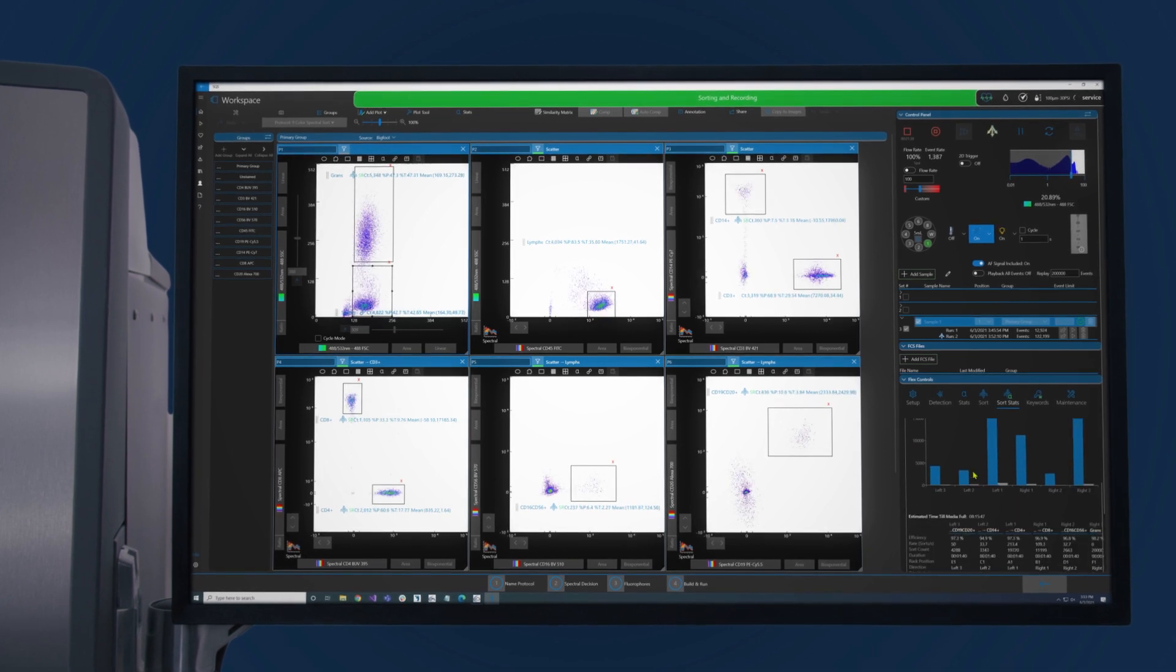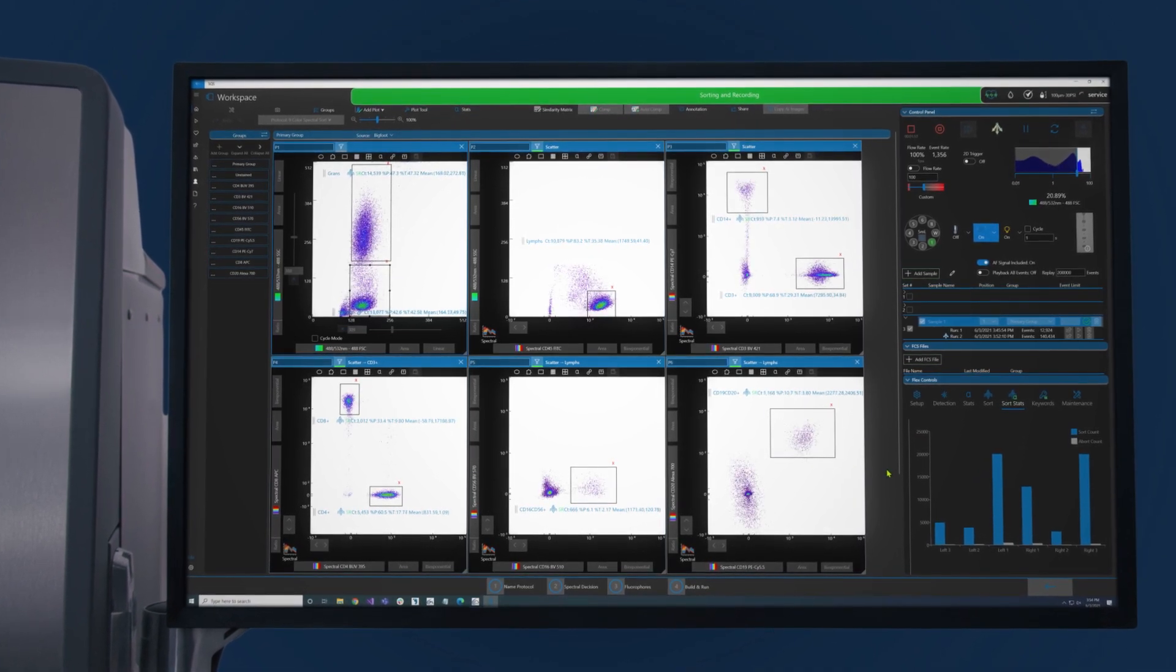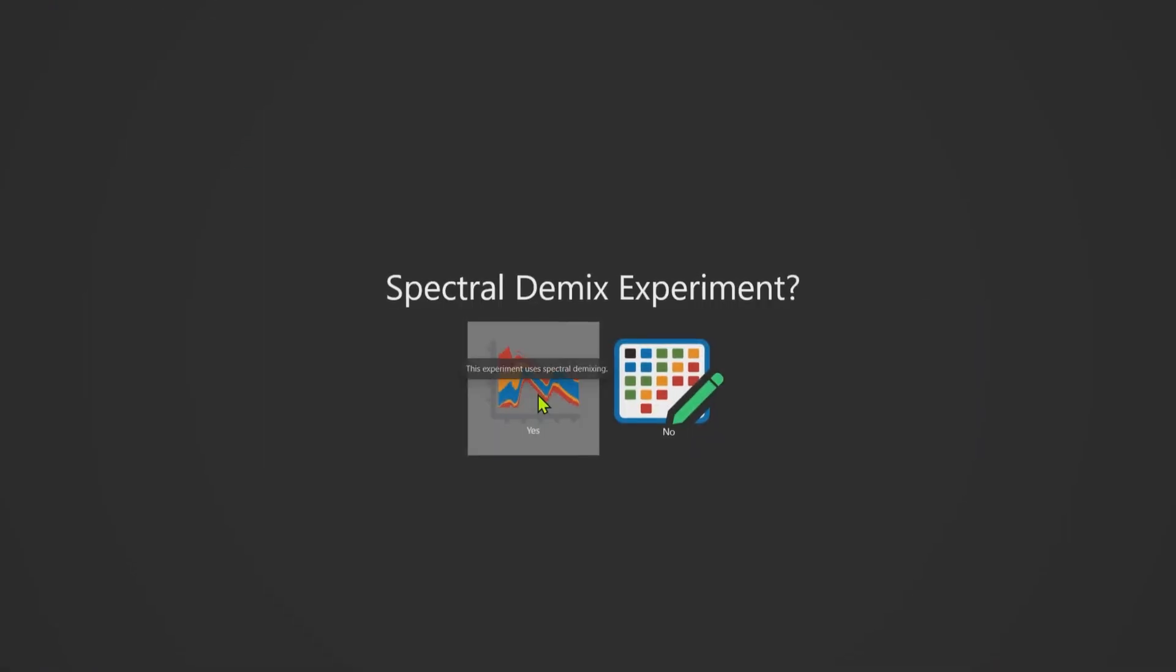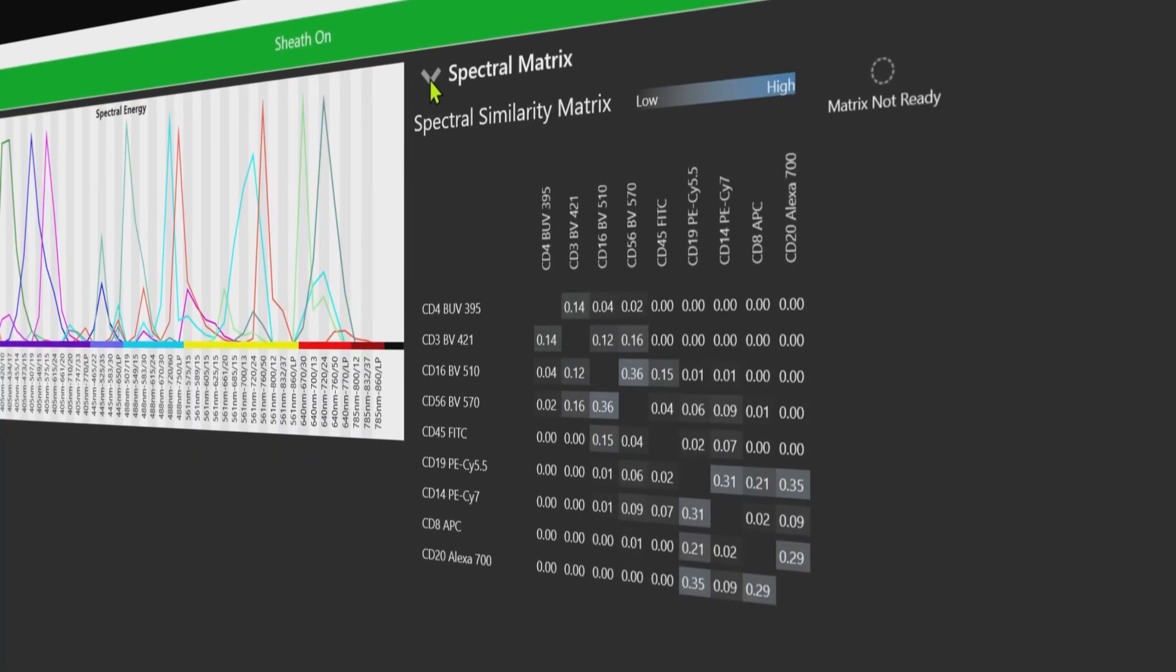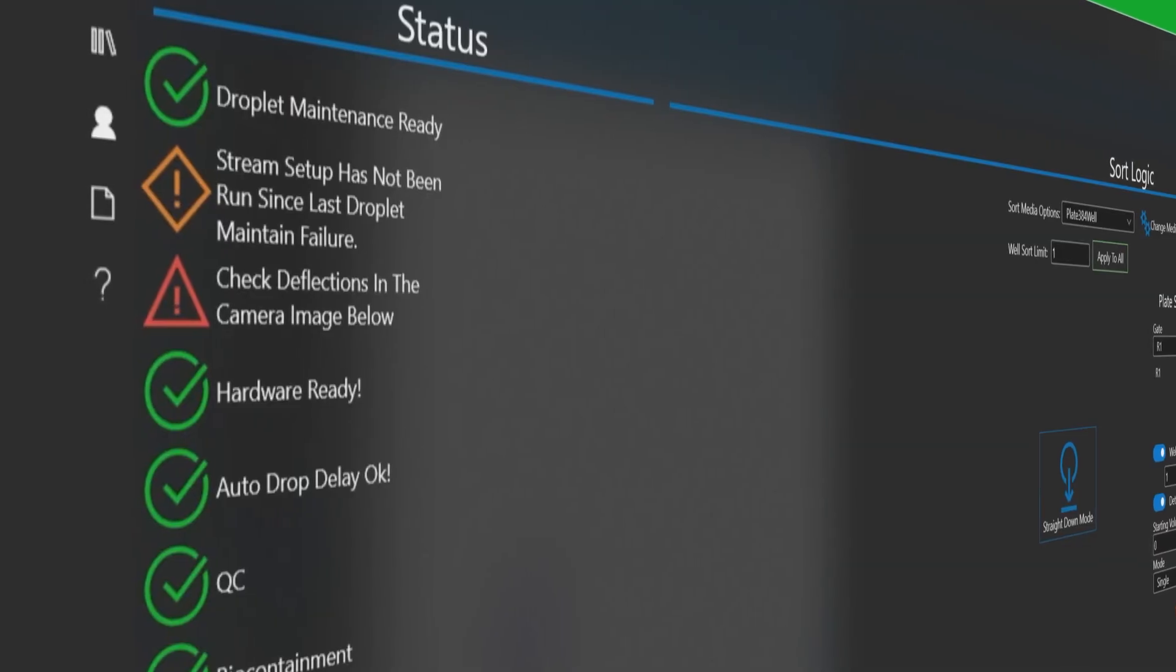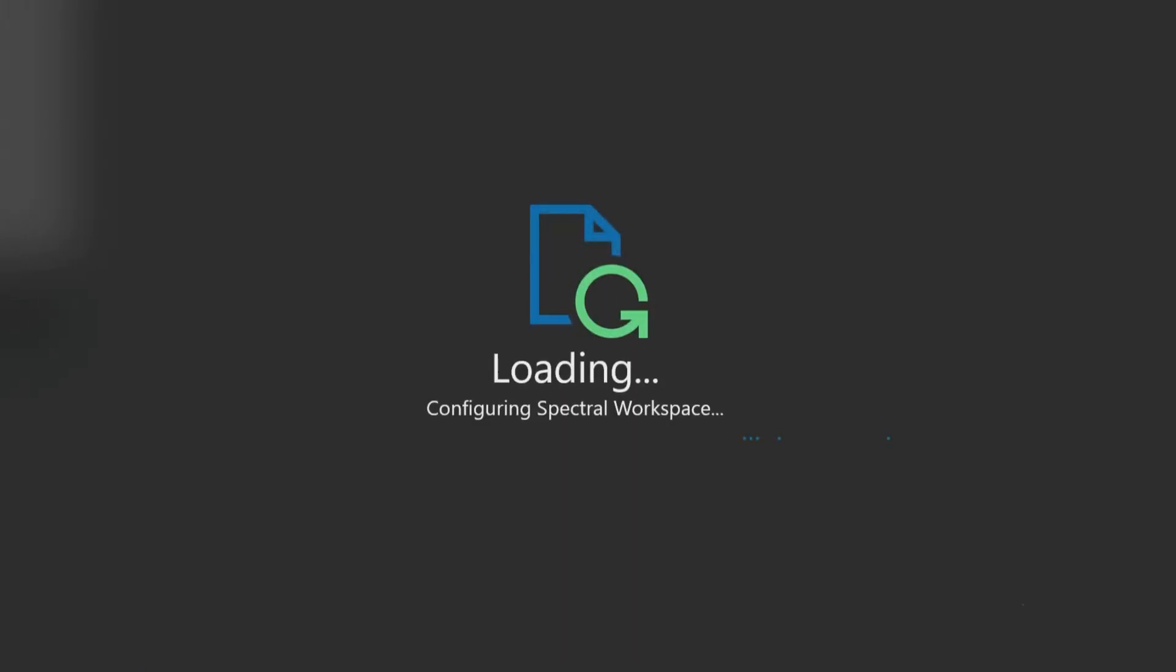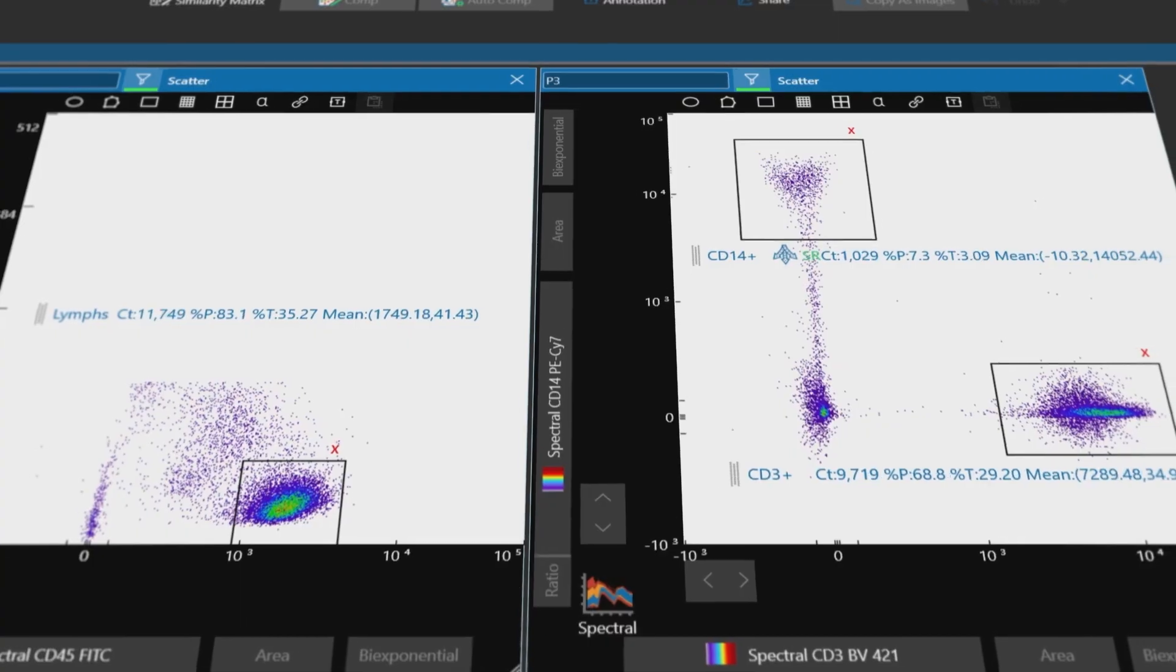Sorting real-time, spectrally unmixed samples allows higher parameter panels. The Experiment Wizard assists the user in running controls, identifying potential issues, and applying the unmixing algorithms to produce high-quality data.